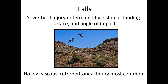Falling is another common mechanism of severe abdominal injury. The severity depends on the distance, the landing surface, and how the patient impacts the ground. This type of injury pattern often involves hollow viscous or retroperitoneal injury. Importantly, patients who have fallen from a significant height are likely going to have very distracting orthopedic injuries — they can be pretty ugly and take a lot of your attention. But don't forget possible underlying injuries even if they're not as visible as the broken bones.